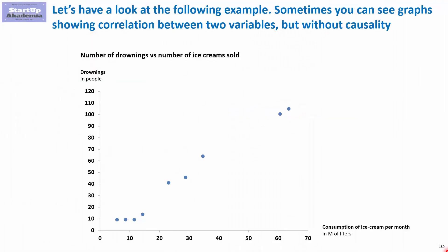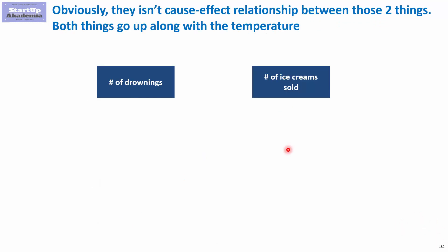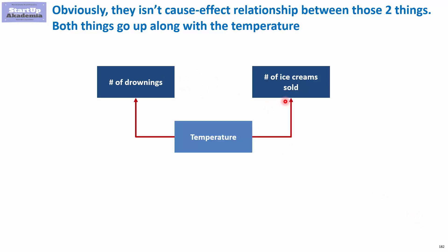One example you can come across is the number of drownings versus the number of ice creams sold. As the consumption of ice cream goes up, the number of drownings also goes up, which might lead to the conclusion that eating more ice cream causes more drownings, and that decreasing ice cream consumption would decrease drownings. Obviously this is not true — it's caused by the fact that both variables behave the same way due to temperature. When temperature goes up, ice cream consumption goes up, and also the number of drownings goes up because people go to the beach and try to swim.